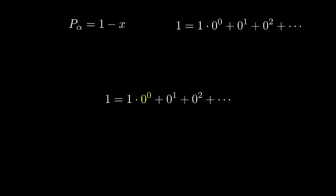But not all formal power series has such an inverse. For example, if p_alpha is x squared, then you cannot find p_beta such that p_alpha times p_beta is 1.